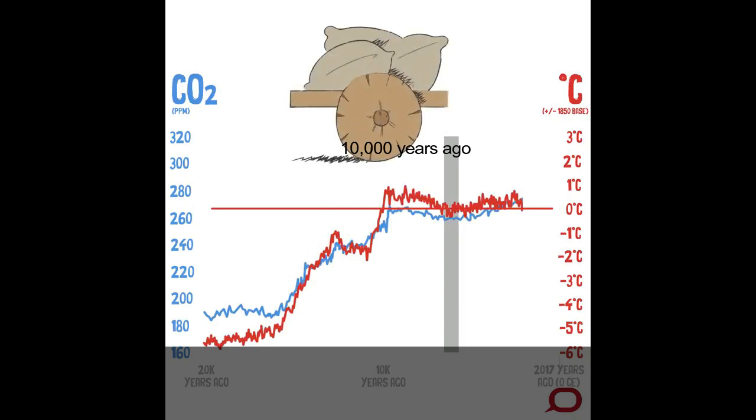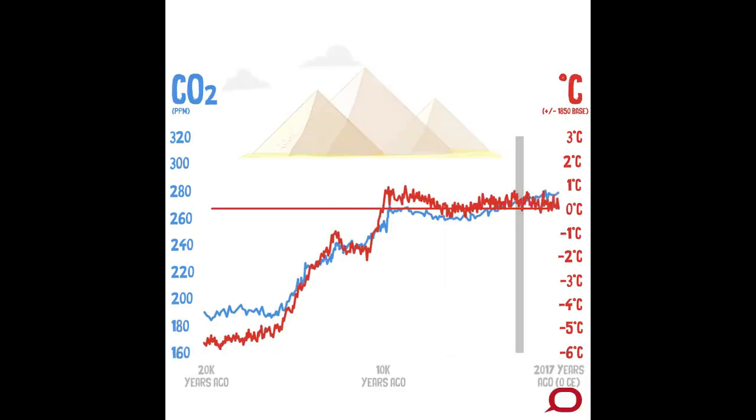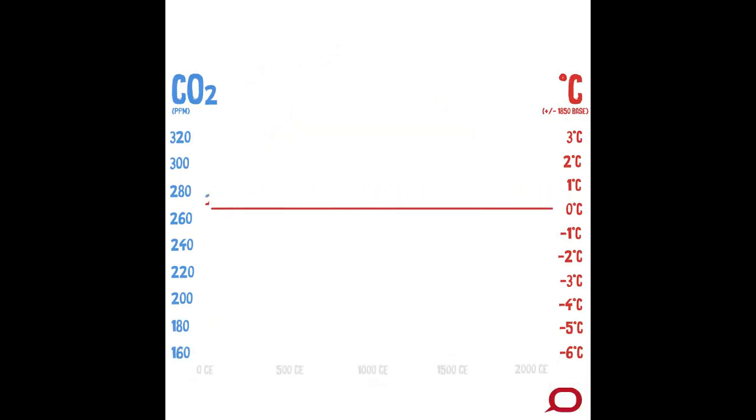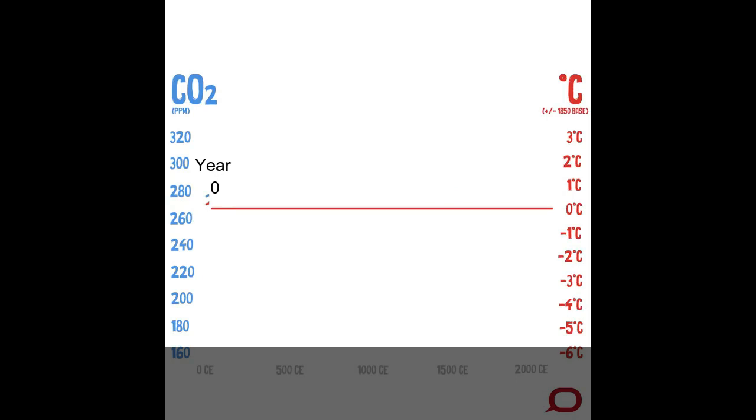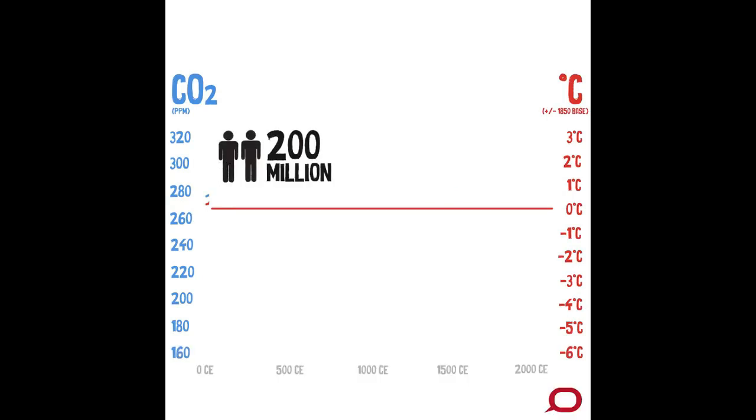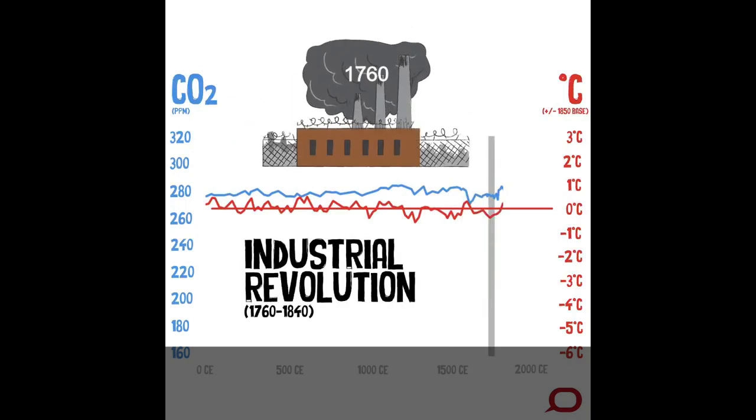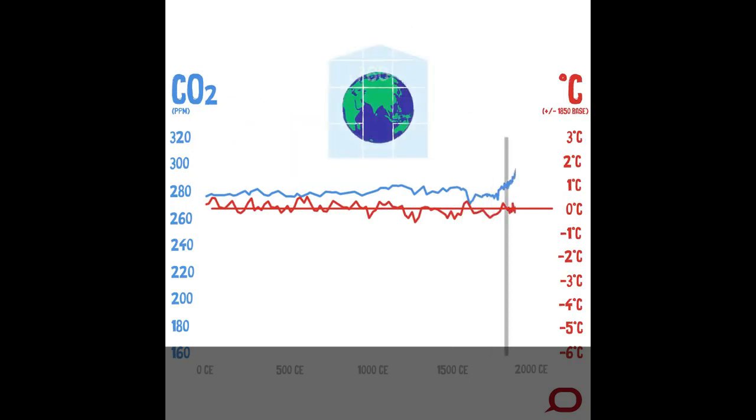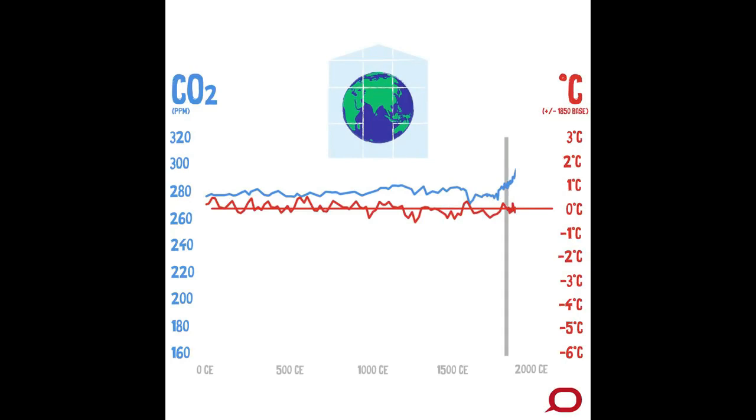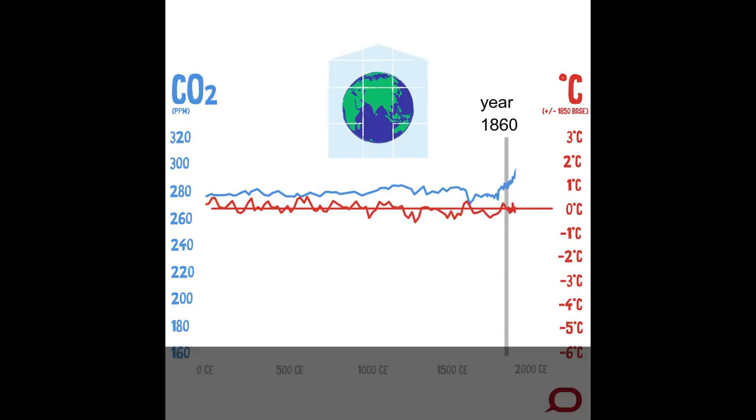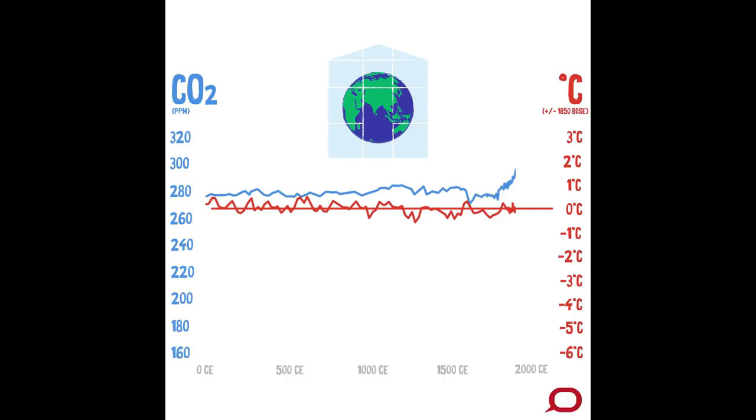And now we hit the common era, the year zero CE. At this point, the world population is just 200 million people. And here's where scientists first demonstrate the greenhouse effect of carbon dioxide, way back in 1861.